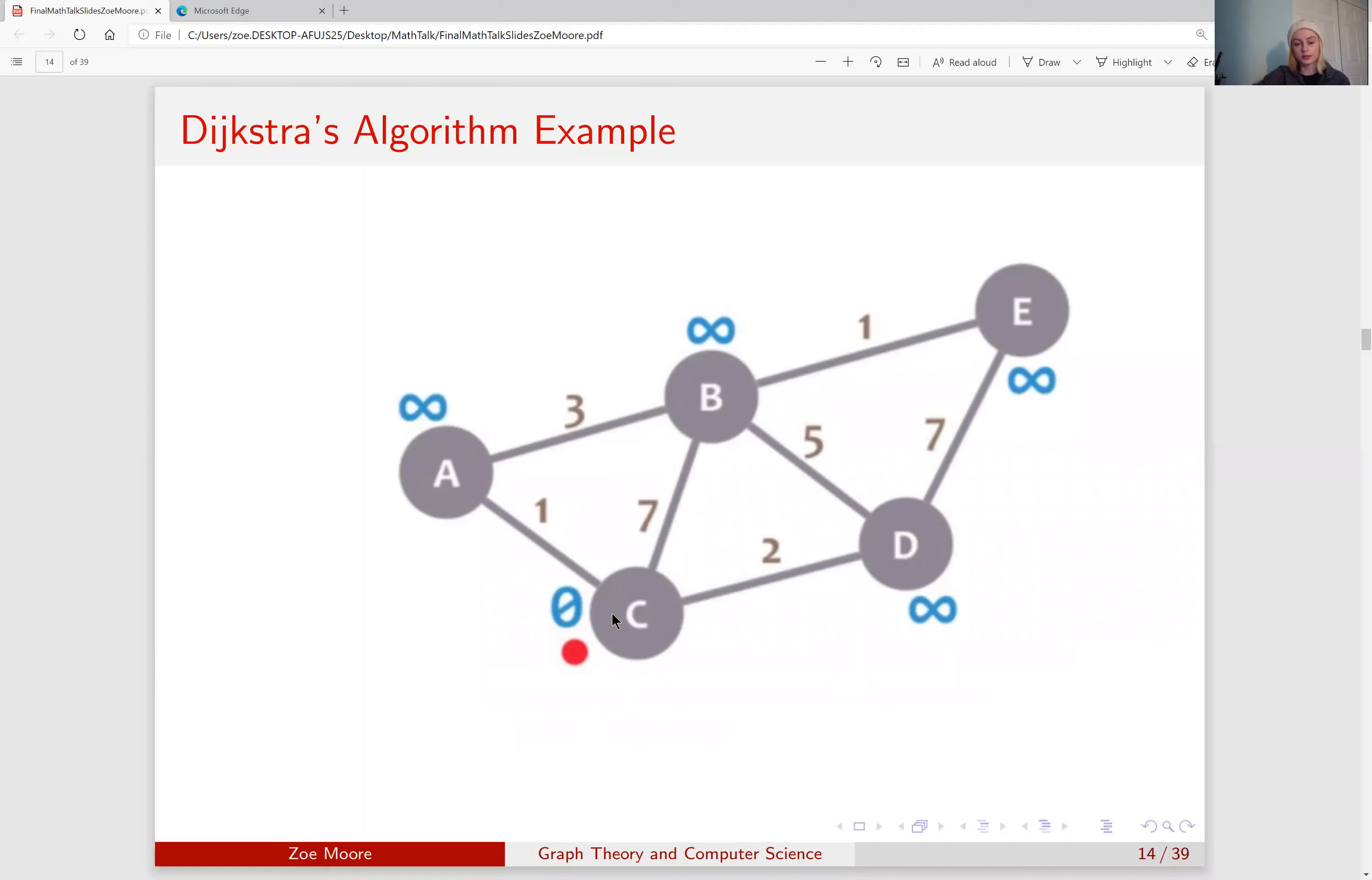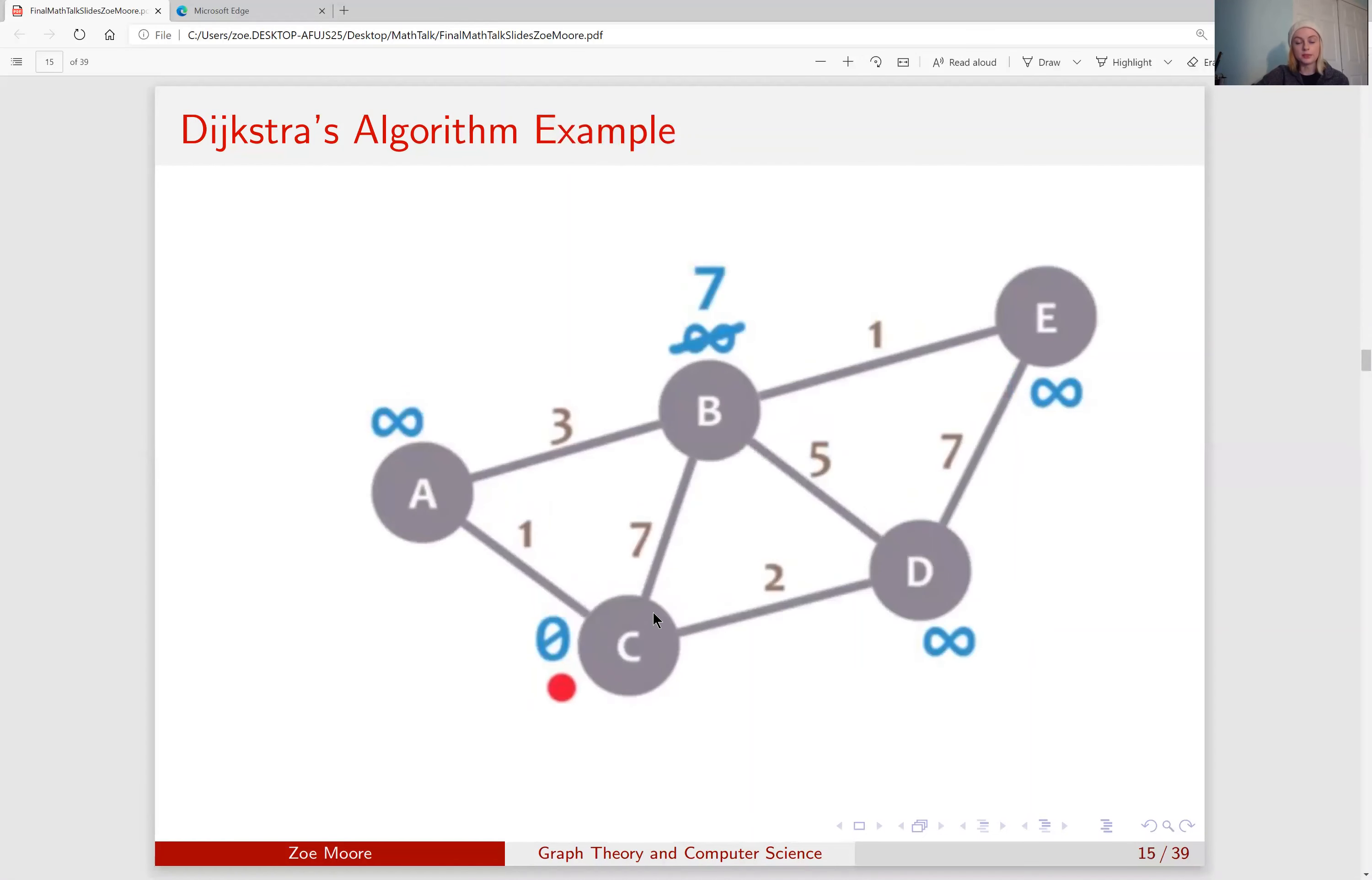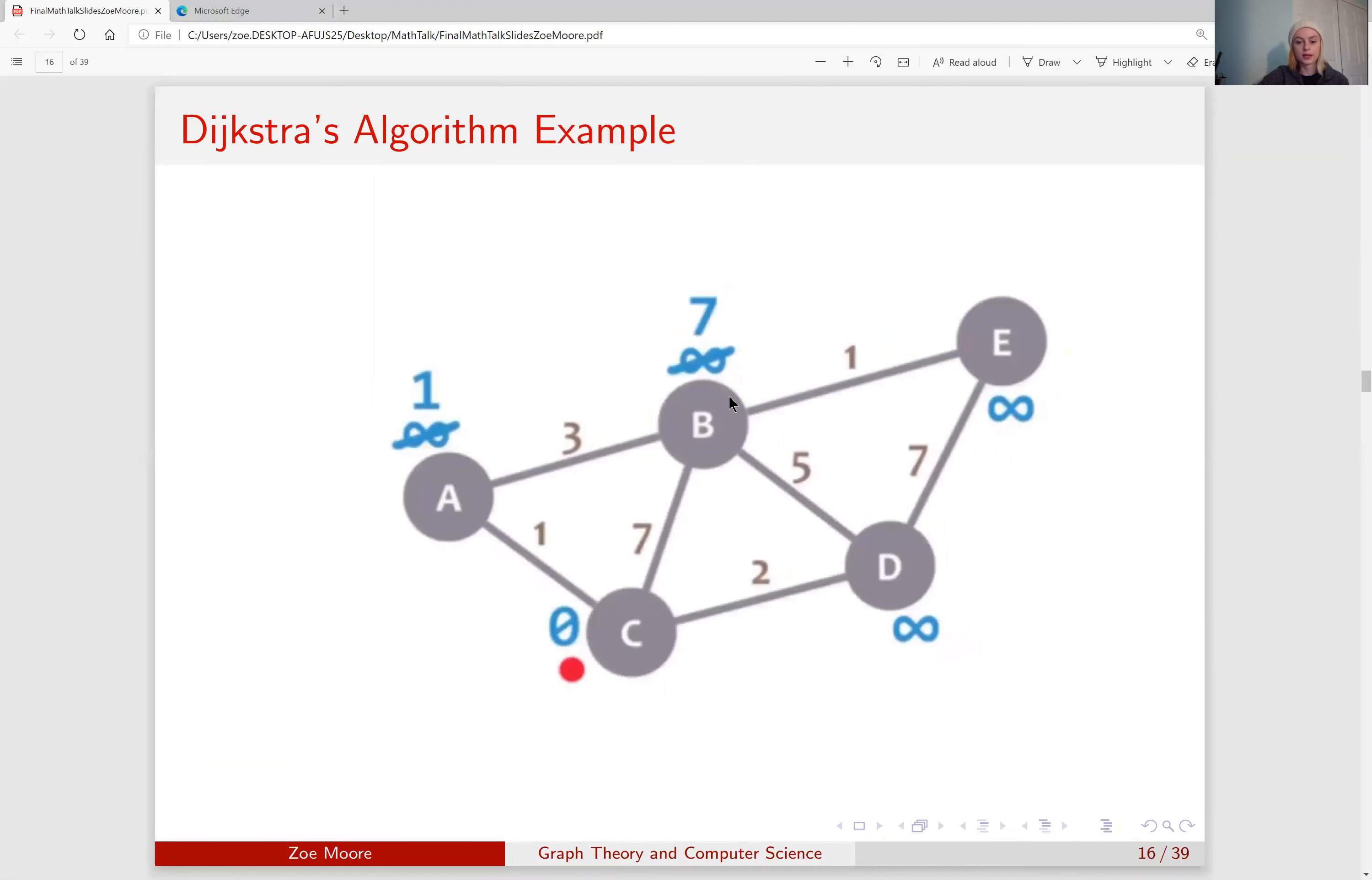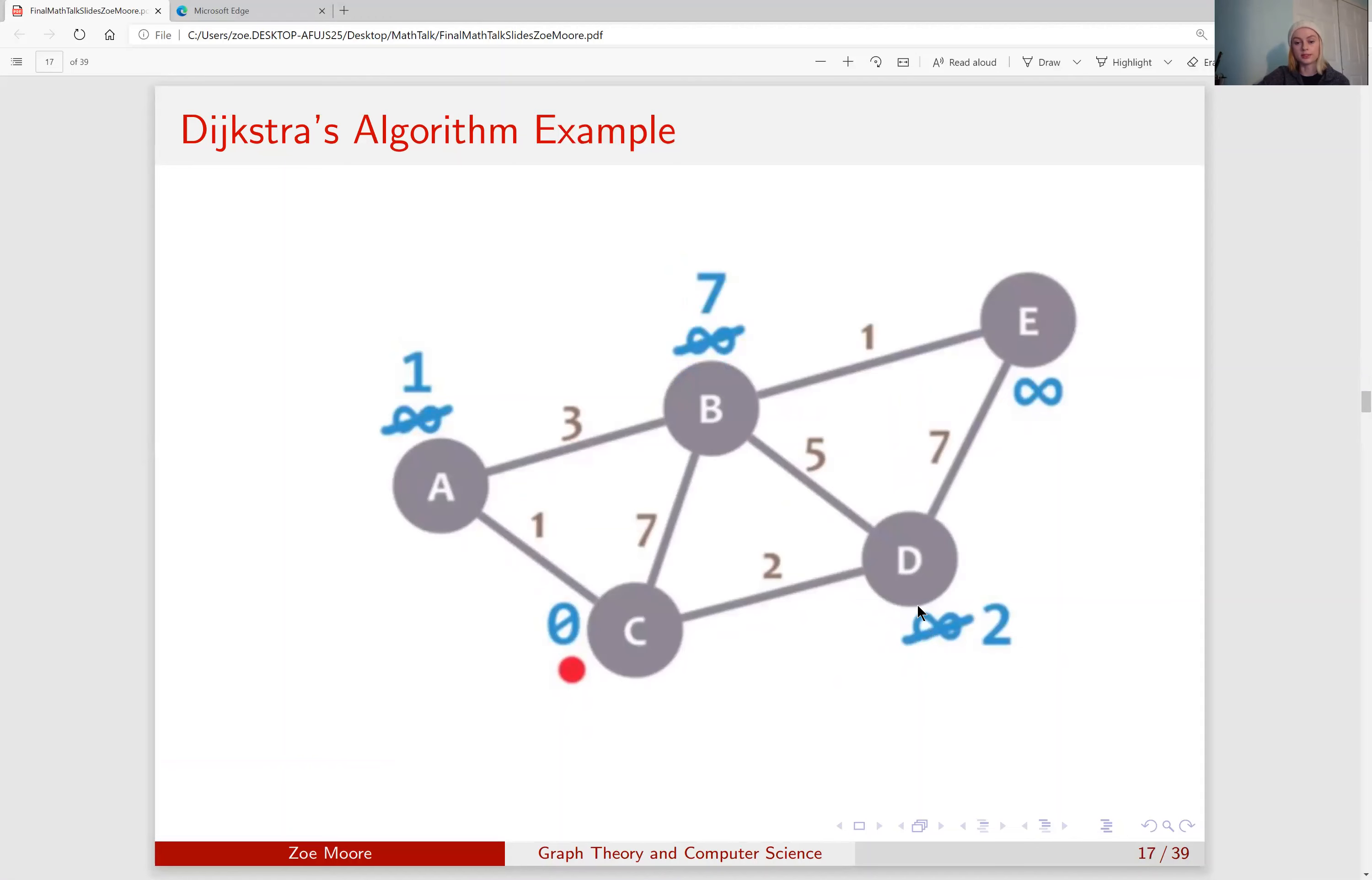So we start at our start node C, the distance from C to itself is 0, and since we have yet to explore every other node in the graph we will set their labels as infinity until we change them as we look at them. So first we will look at C and all of the nodes that it is connected to and record the distance between these nodes. So C to B is 7, which is smaller than infinity, so we will change the label on B and change that to 7. C to A has a weight of 1, so we change the label on A to 1, and C to D has a weight of 2, so we change the label on D to 2.